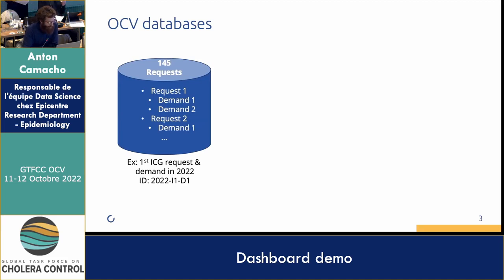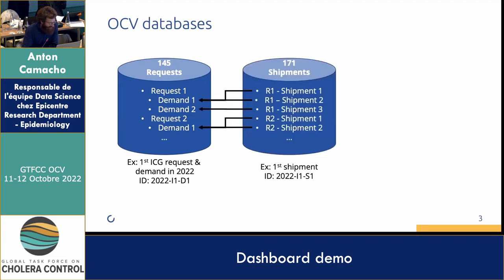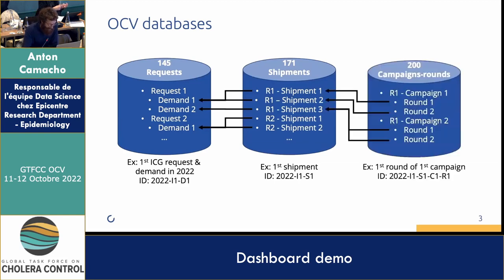Once the request is approved, there will be shipments. We have 171 shipments in the database, and each shipment is attached to a request and linked to a particular demand. So the first shipment for a request would be called 2022 I1S1. Finally, there will be campaigns and rounds — two rounds per campaign attached to those shipments. One shipment is usually for one round, but a shipment can be attached to several rounds.